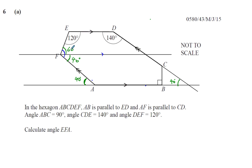And that's 60. So the angle we need, which is EFA, the angle we need, which is EFA, is equal to 60 degrees plus 40 degrees, which is equal to 100 degrees. So that's 6, part A, done.